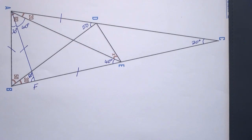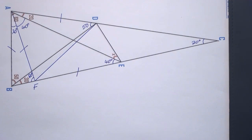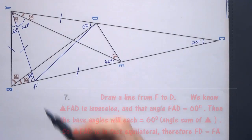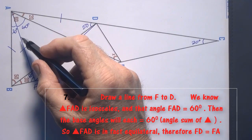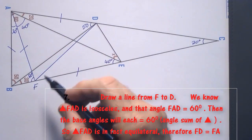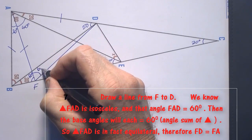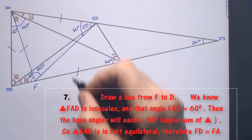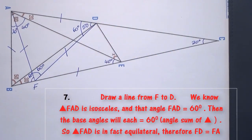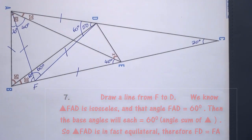Now draw a line FD and consider triangle AFD. We know it has two equal sides and a top angle of 60 degrees, so the base angles will also be 60 degrees each — giving us an equilateral triangle.